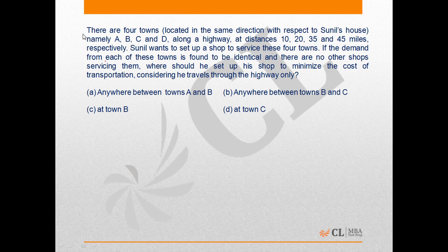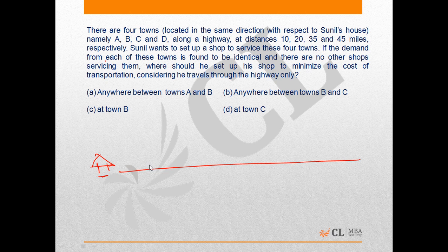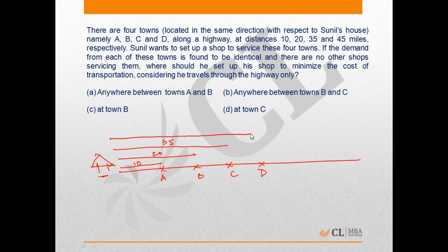This question may not look like a question on averages, but it actually is. It says there are four towns located in the same direction with respect to Sunil's house, namely A, B, C, and D. Along the highway, the towns are at distances 10, 20, 35, and 45. Sunil wants to set up a shop to service these four towns, where the demand from each town is identical and there are no other shops servicing them.